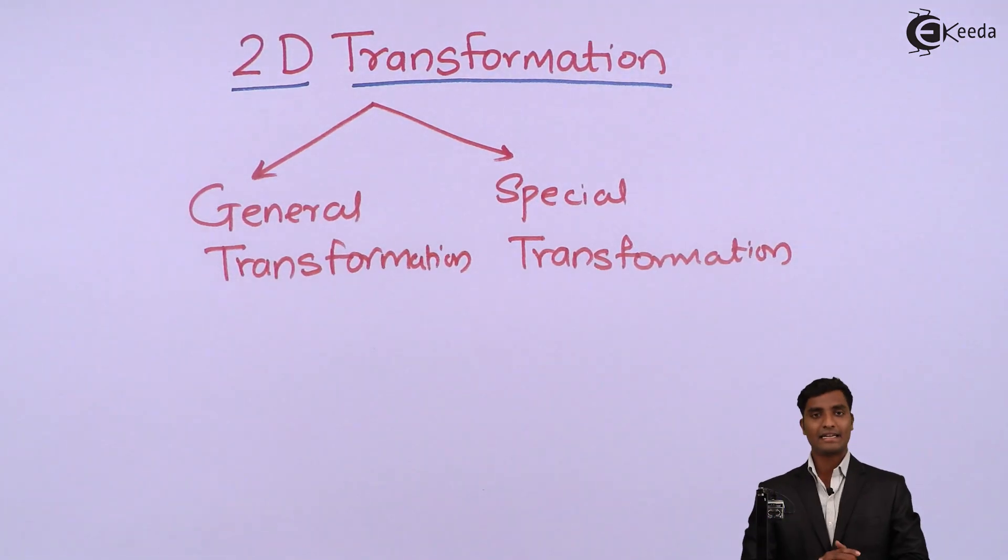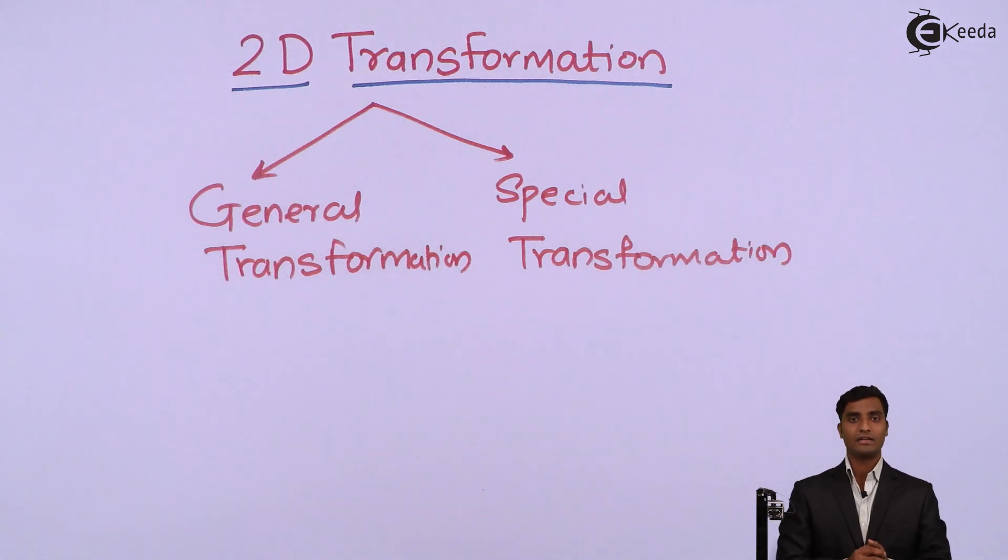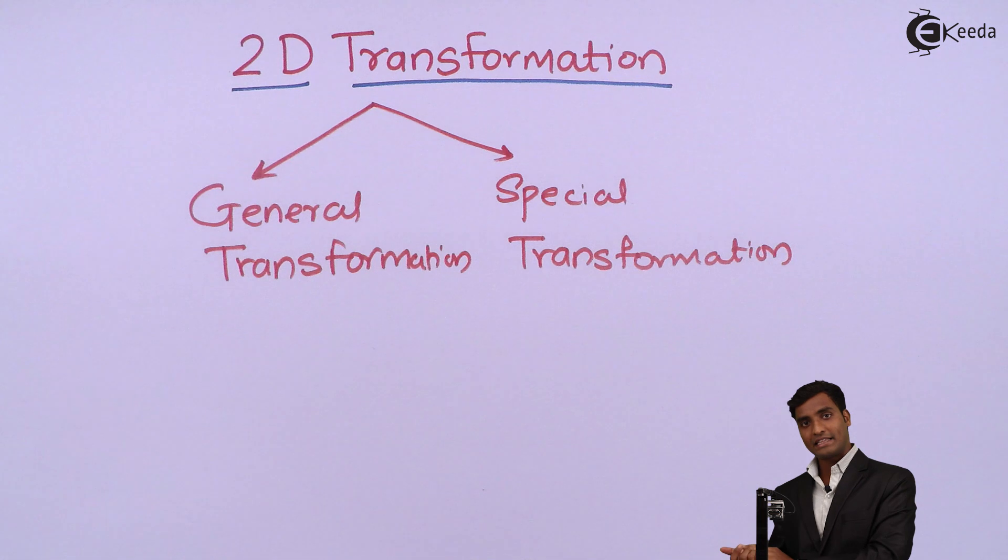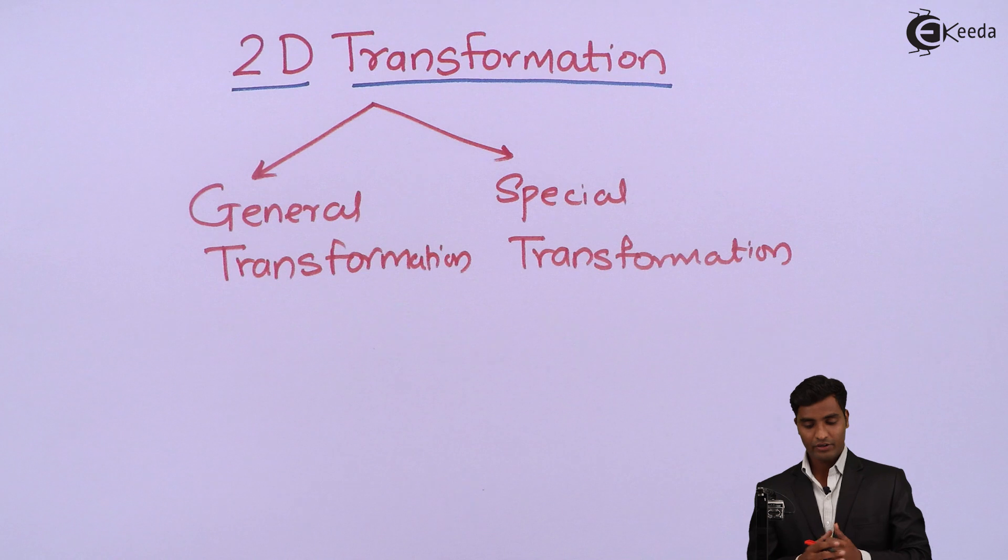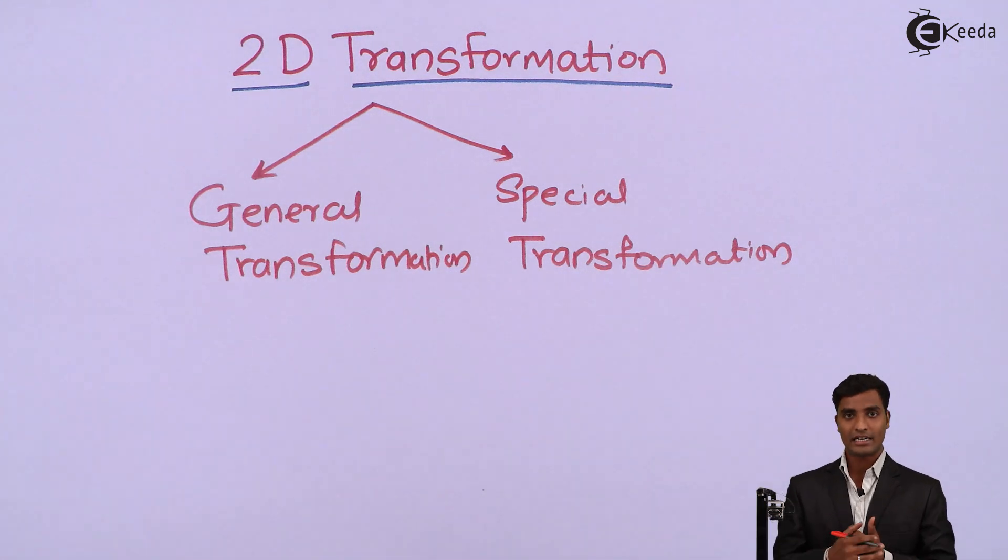As it is categorized as general transformation and spatial transformation, before starting we should require the mathematical tools means change in the image are done with following mathematical operations. For that we will require matrix multiplication. So we should have idea about matrix multiplication. Now we will continue with general transformation.